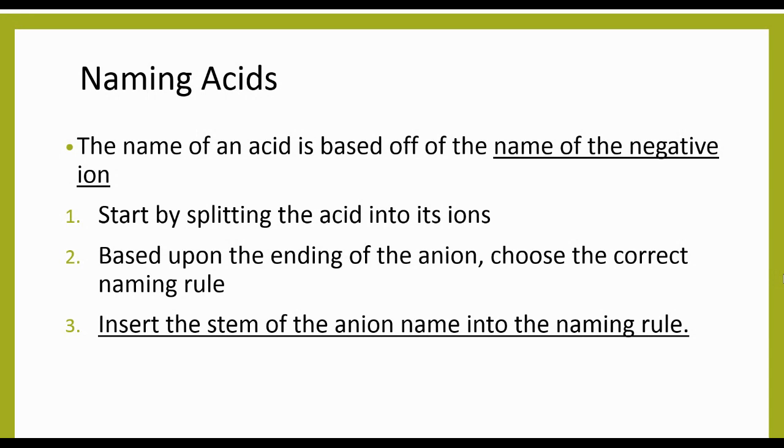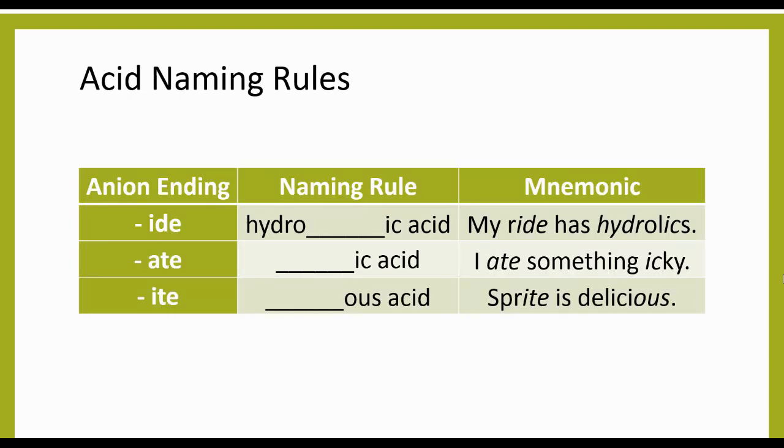Based upon the ending of the anion, we're going to choose the correct naming rule. We'll talk about those in a second. Then we take the stem of the anion name. So if we have fluorine, the stem of that name is the fluor. If we have chlorine, it'd be chlor. We take the stem of the anion name and put that into the naming rule.